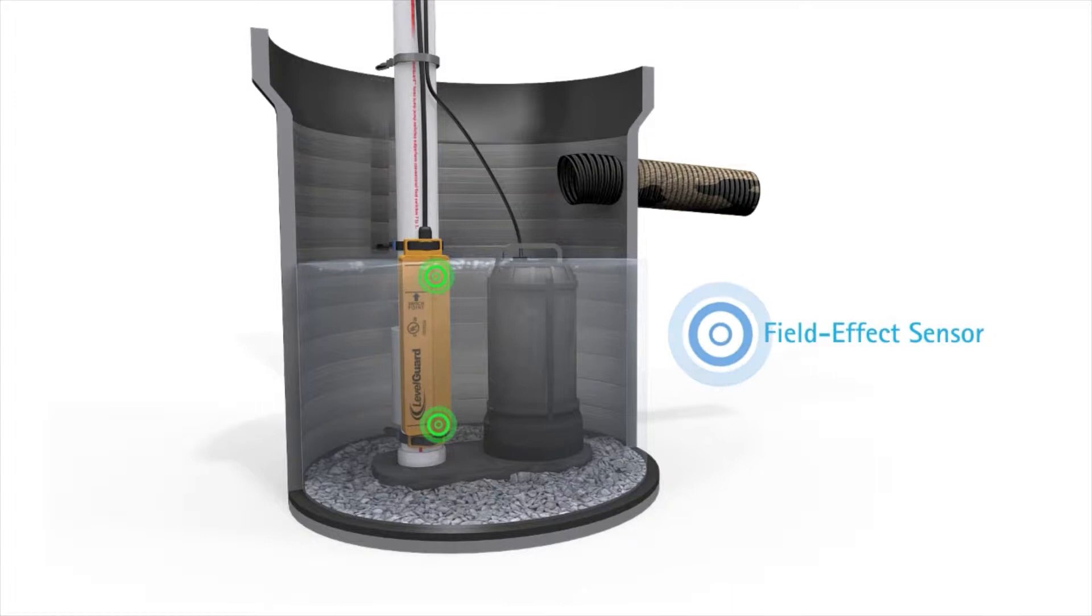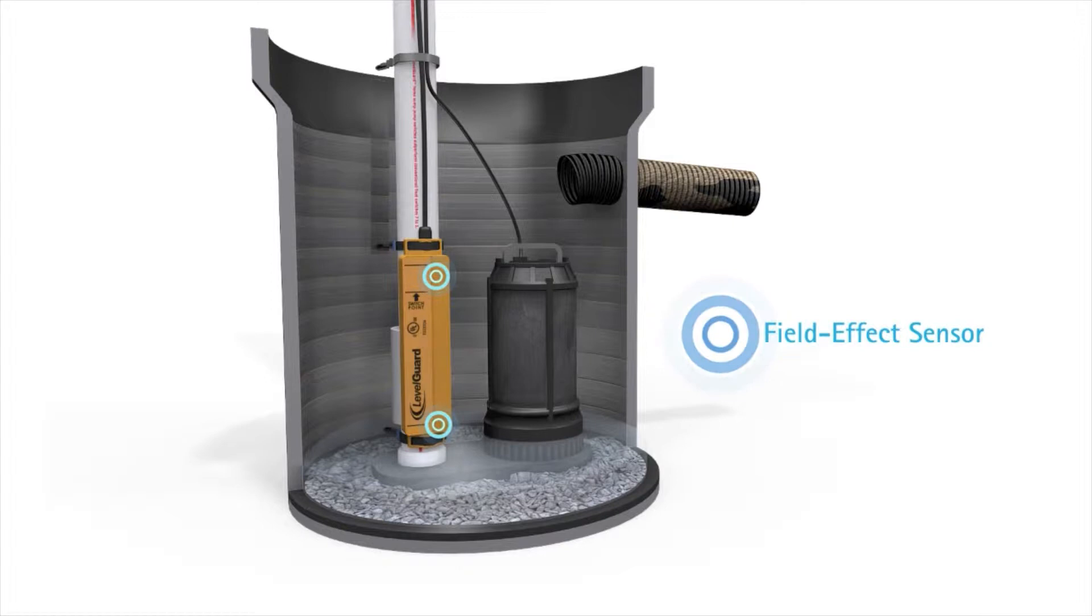Level Guard mounts to the discharge pipe of the pump system and is fastened with two zip ties or two stainless steel clamps. The non-corrosive unit efficiently manages a seven inch column of water. A two second time delay feature ensures a ten inch differential before the pump is turned off.